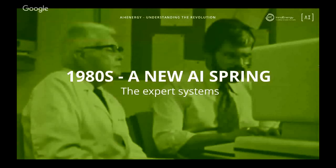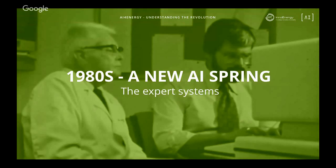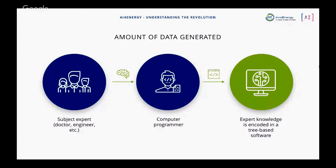In the 1980s, there was a new AI spring. This time companies — not the government — started investing in artificial intelligence with a different approach: something called expert systems. An expert system works by having a subject matter expert — a doctor, an engineer — explain how a phenomenon works to a computer programmer. The programmer encodes those rules into a decision-tree-based software. For example, a doctor tells the computer scientist: if a patient says they have a headache, ask if they drank yesterday; if yes, ask how much — building a huge decision tree of all possible cases.